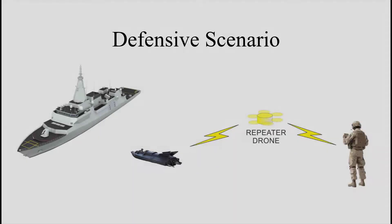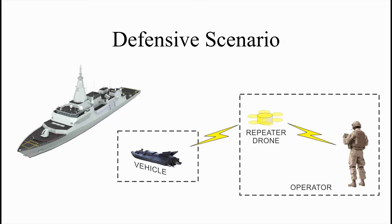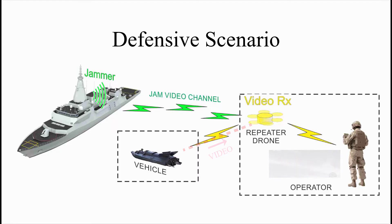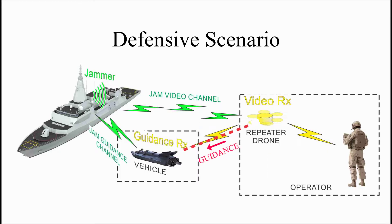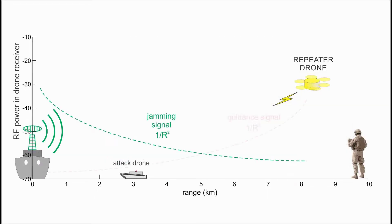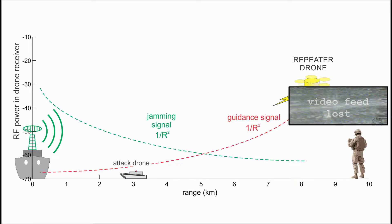From a jamming standpoint, the drone is a weapon system with two parts: an operator and a vehicle. The system has two vulnerabilities to RF jamming. The first is the operator's video receive channel — back where the operator is located, there's a receiver that receives a video signal from the drone. The second vulnerability is the drone's guidance receive channel, the receiver onboard the drone that receives signals from the operator. For illustration purposes, let's jam the drone's receive channel, since the closer the drone gets to the ship, the stronger the jamming signal is and broadly the weaker the control signal is. Depending on power levels, the jammer might also shut down the operator's video link, but for expediency we'll ignore that.